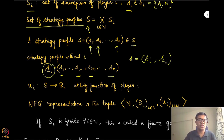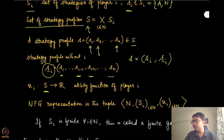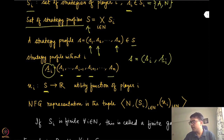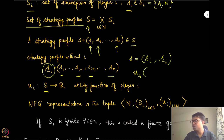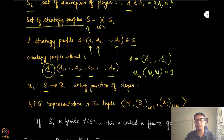We also define the utilities or payoffs. Since these players are rational, we have to define what objective they are trying to maximize. This objective is given by the utility function U_i. Once each player has chosen a specific strategy and we have a strategy profile, the utility function for player i maps that strategy profile to a real number. For example, if both kingdoms choose war, then we have defined the corresponding utility for player A — I think it was one in the previous example. You can define this utility function for all possible strategy profiles.